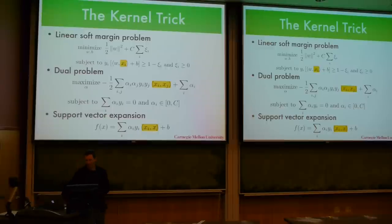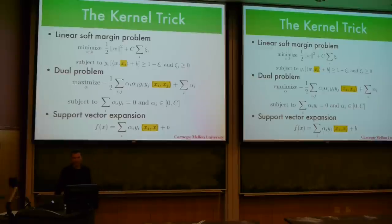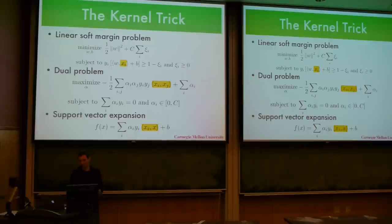The nice thing about the dual problem is that you can write it entirely in terms of inner products — the x_i's and x_j's only appear as x_i dot x_j. We already saw this with the perceptron and we see it again now. The support vector expansion looks exactly like the perceptron expansion, with the only difference being that we now have weights alpha_i up front, whereas for the perceptron every incorrectly classified observation had just a weight of one.